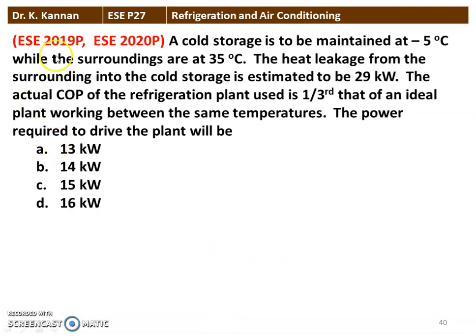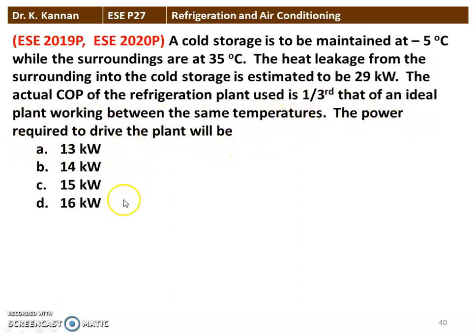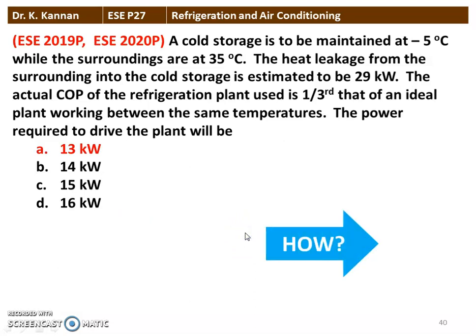The next question from the 2019-20 question paper: A cold storage is to be maintained at minus 5 degree Celsius, while the surroundings are at 35 degree Celsius. The heat leakage from the surrounding to the cold storage is estimated to be 29 kilowatts. The actual COP of the refrigeration plant used is one third of that of the ideal plant working between the same temperatures. The power required to drive the plant will be — we have 4 options here. The correct answer is 13 kilowatt. We will see how in the next slide.